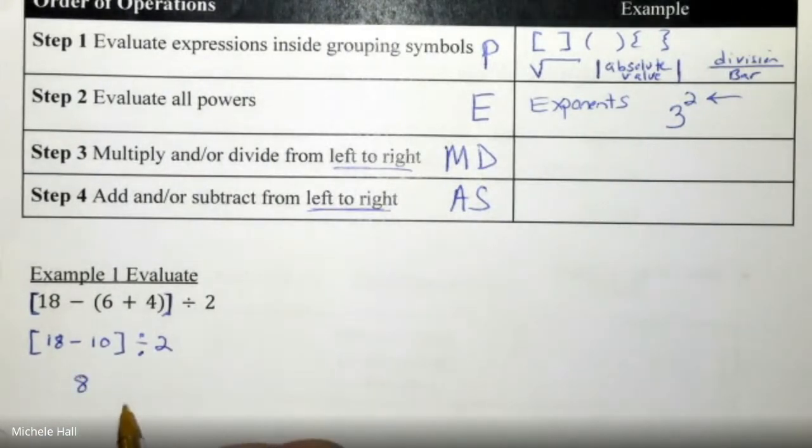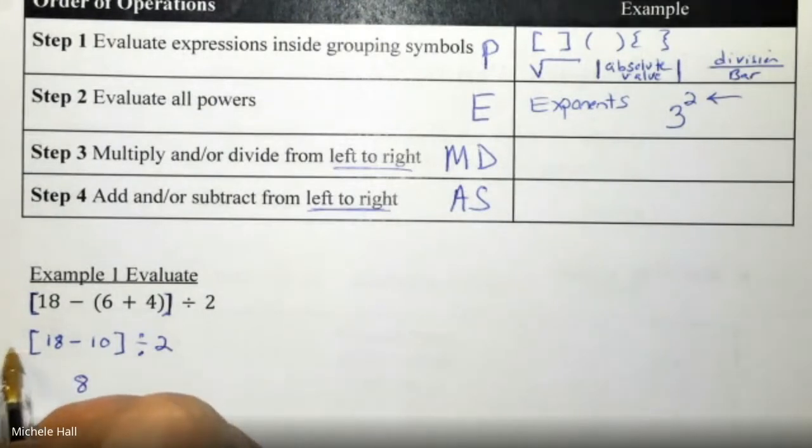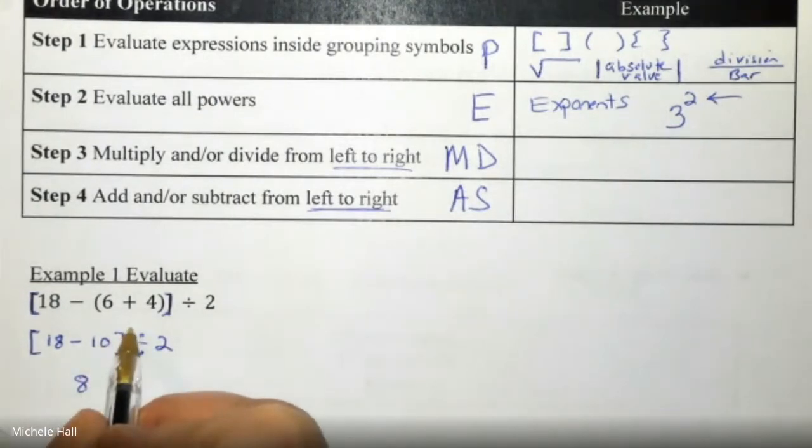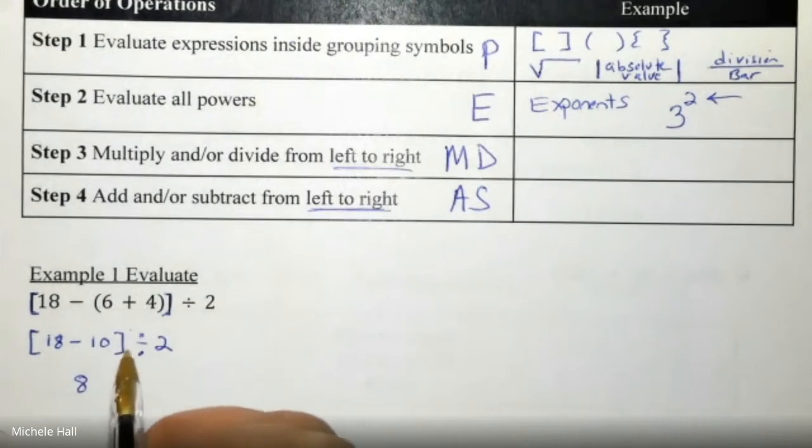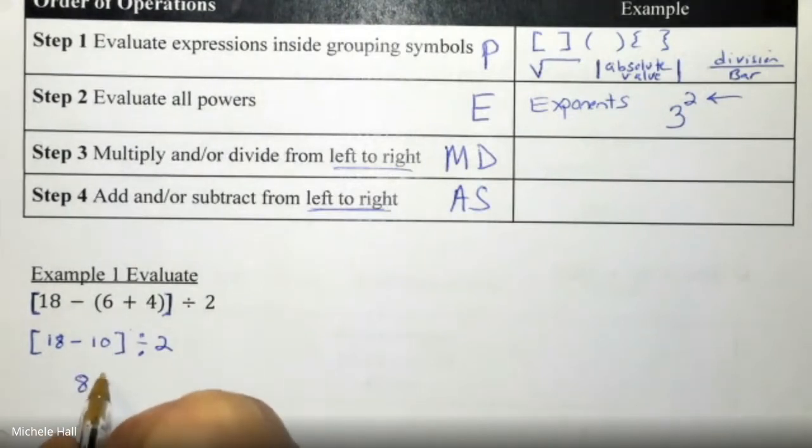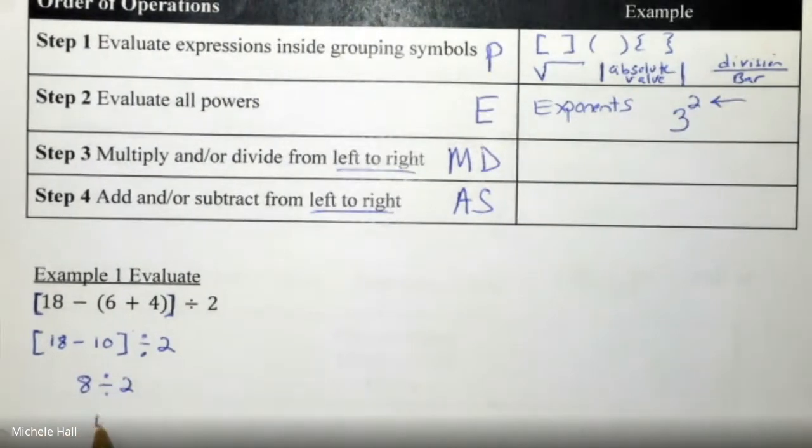I can drop the parentheses - there's nothing out front being multiplied to it, it's not being raised to a power, so I have 8 divided by 2, which is 4.